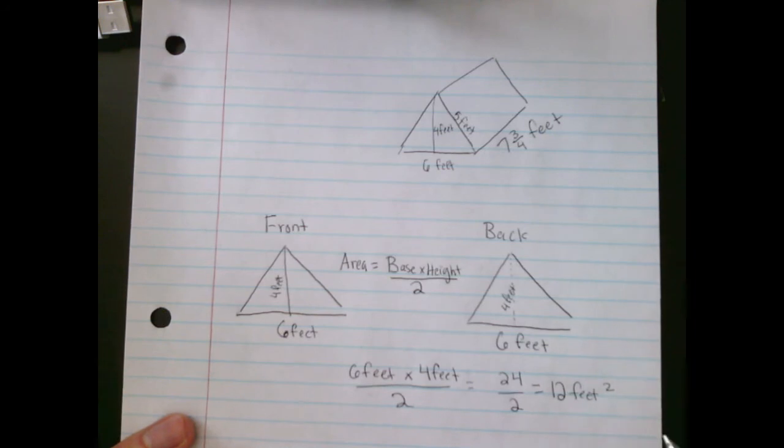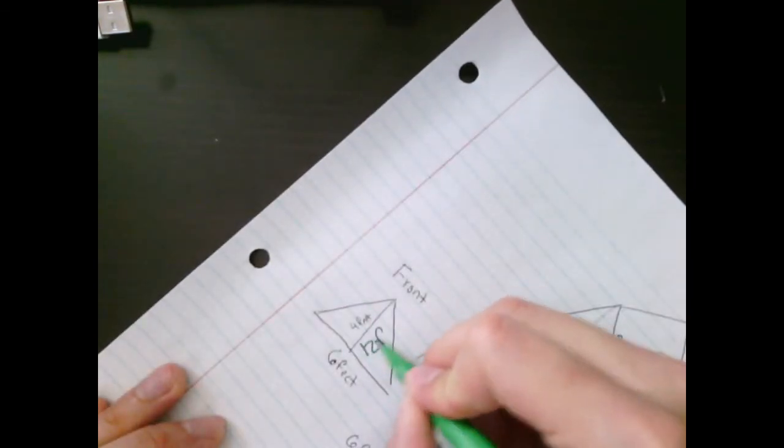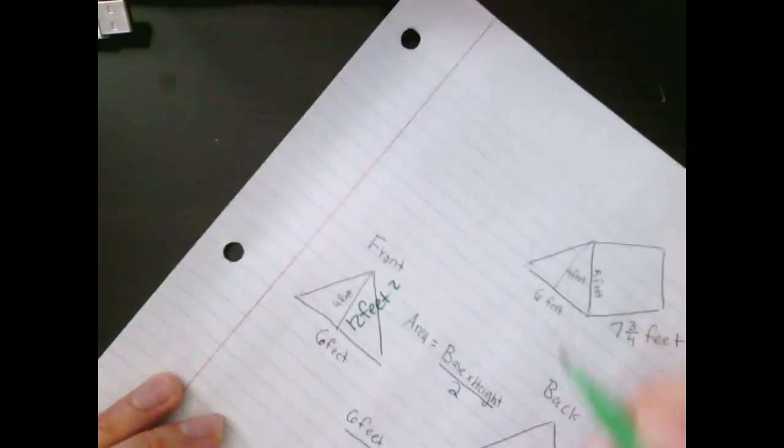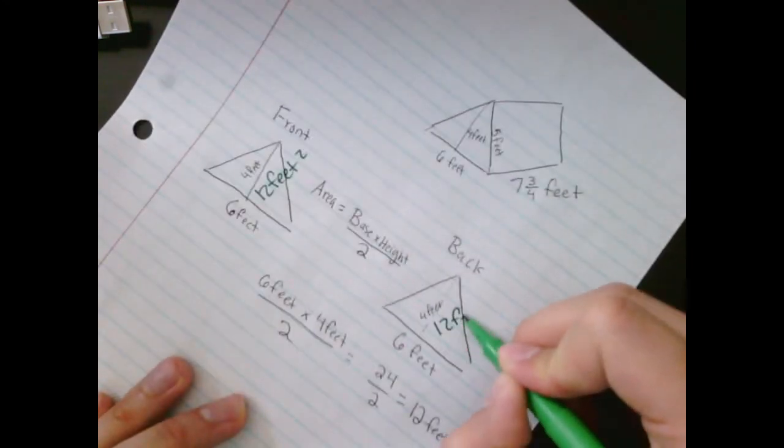Okay, so I'm going to write that in green. The area for these triangles is 12 feet squared.